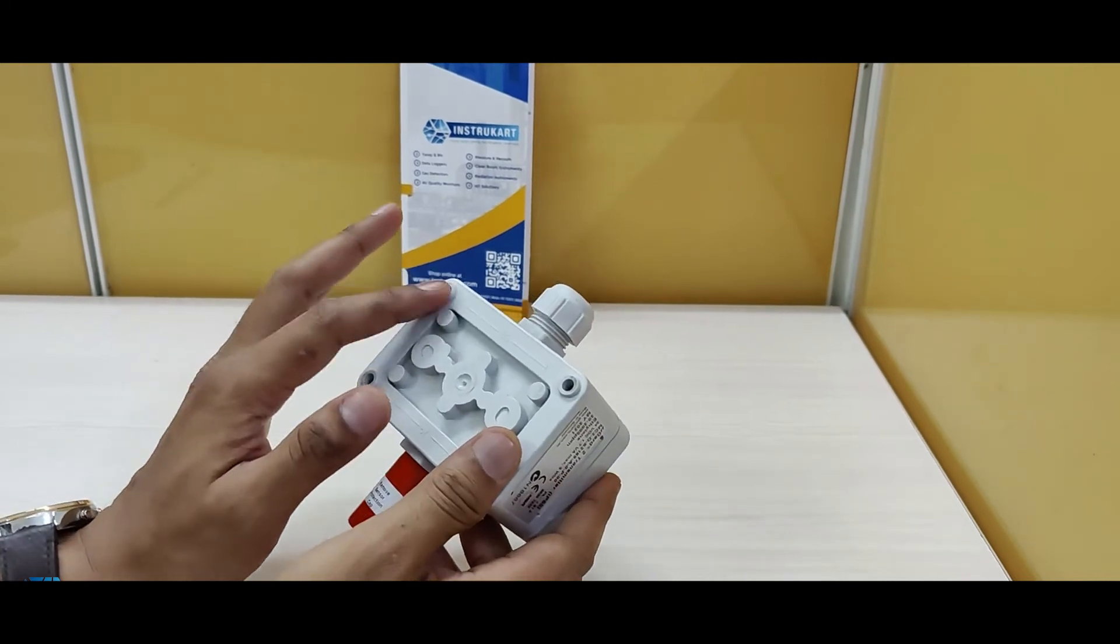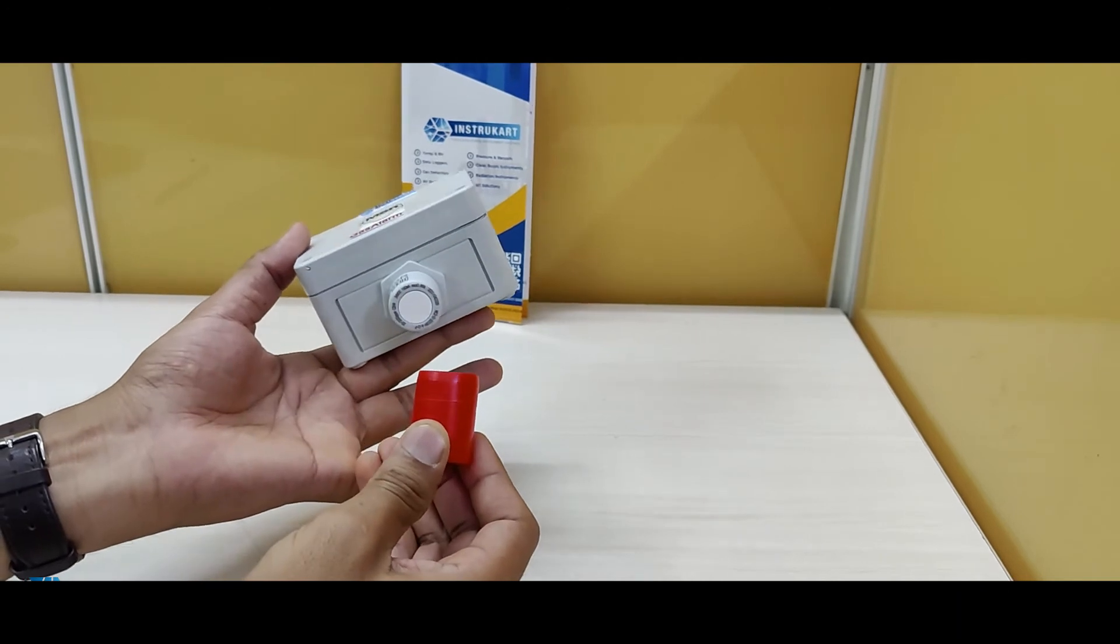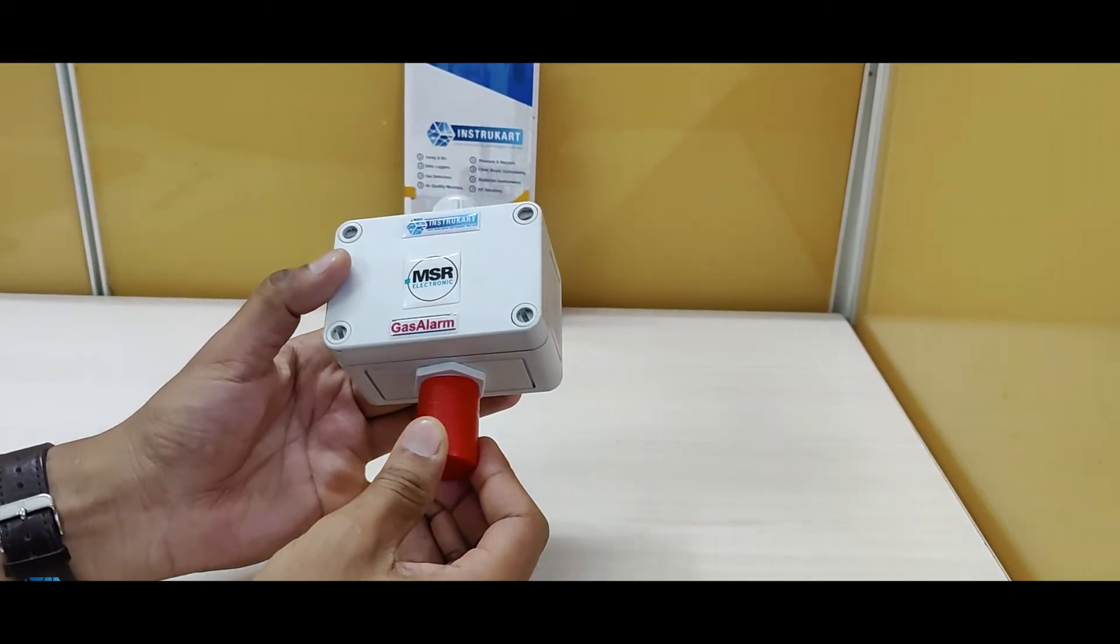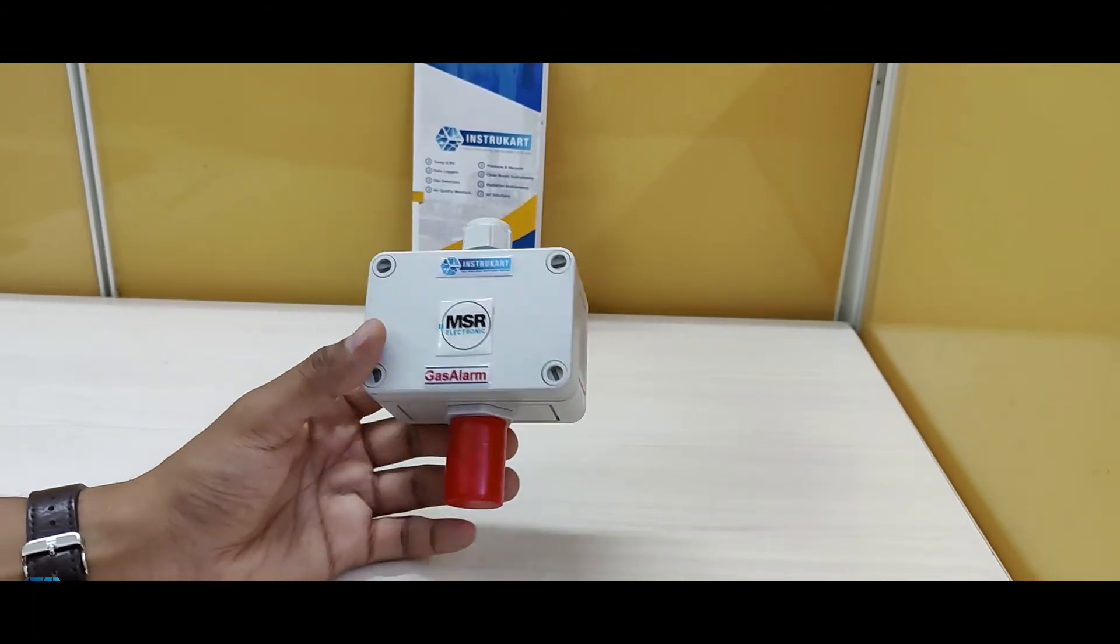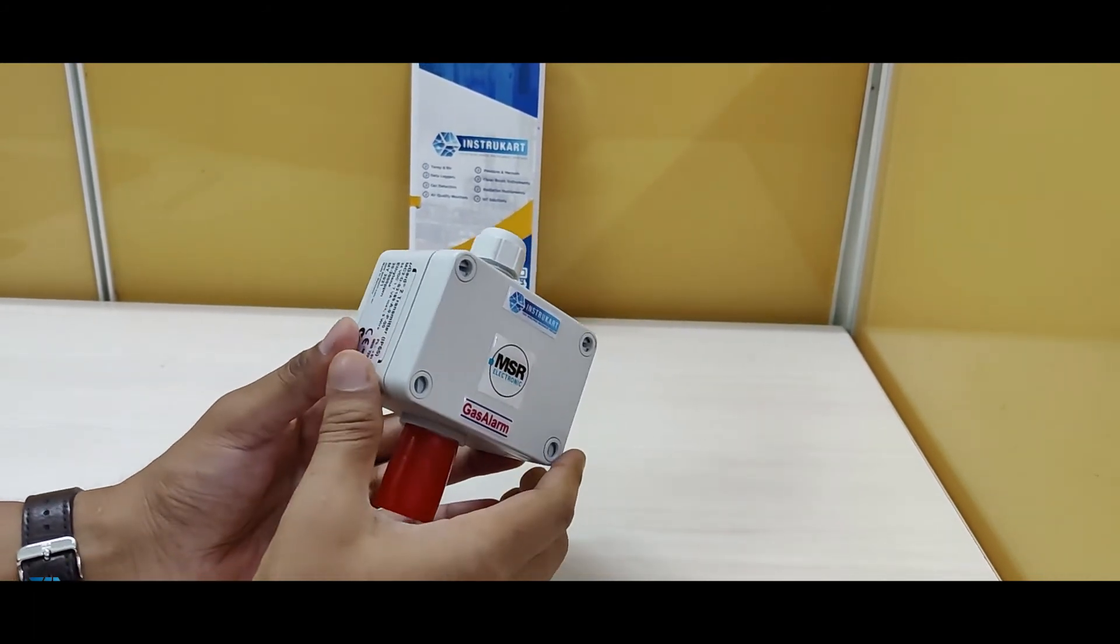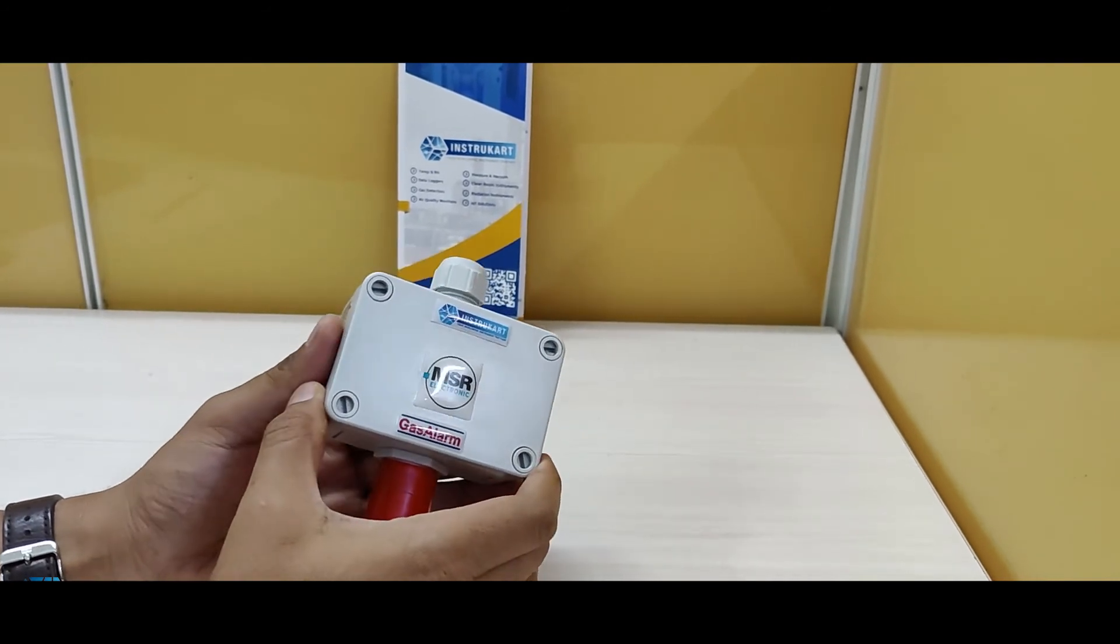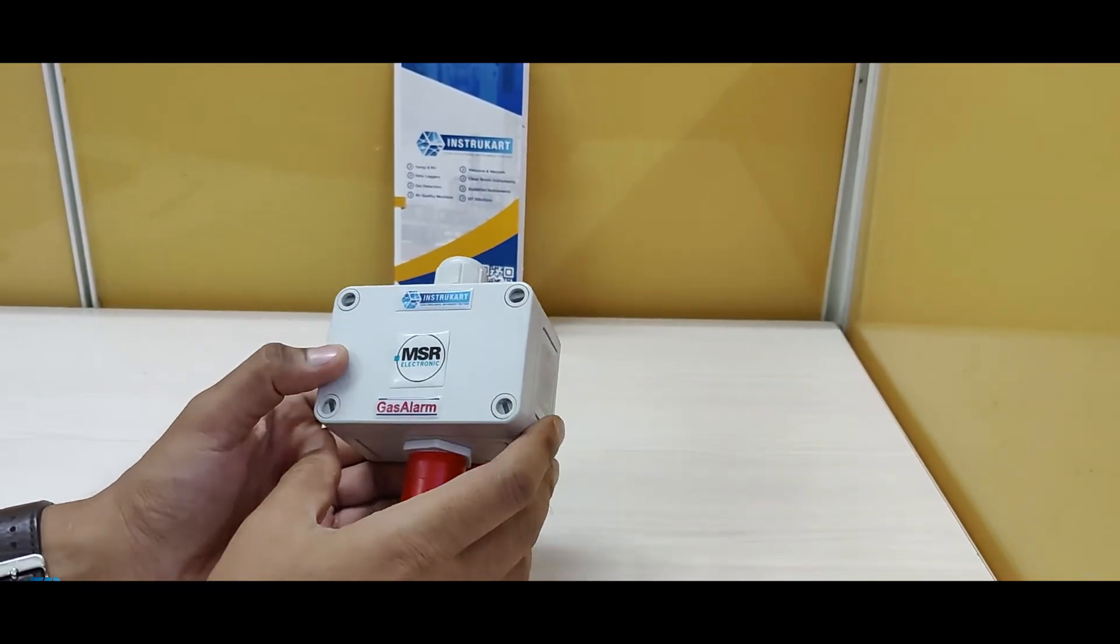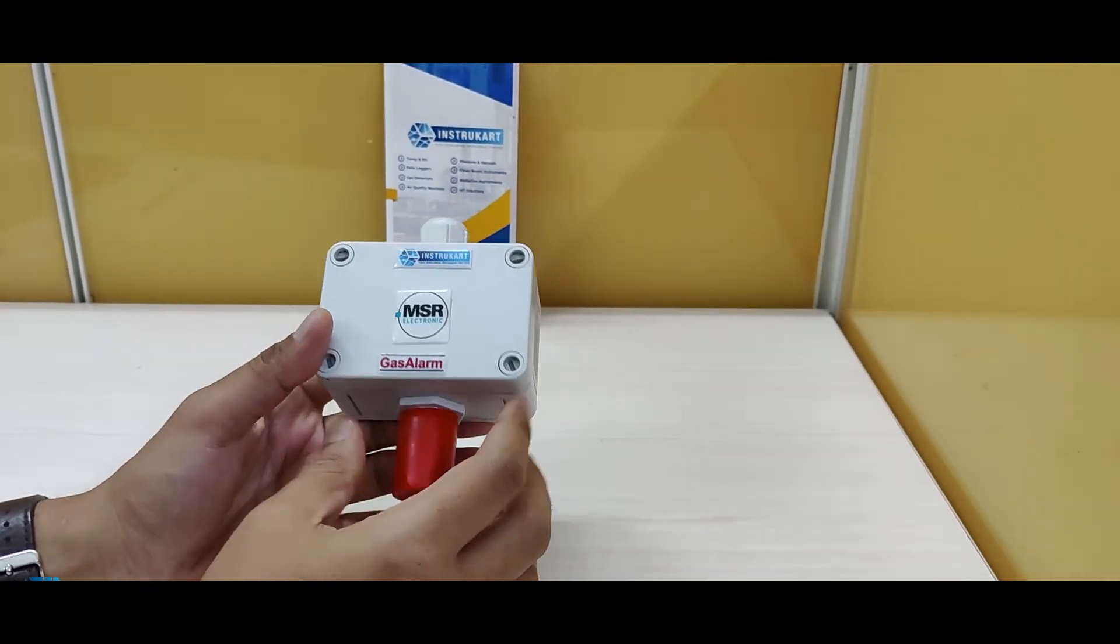It has a polycarbonate enclosure and the storage temperature for this device is between 0 to 20 degrees Celsius only for the sensor part. However, for the instrument it can work in ambient temperature up to 50 to 60 degrees Celsius.